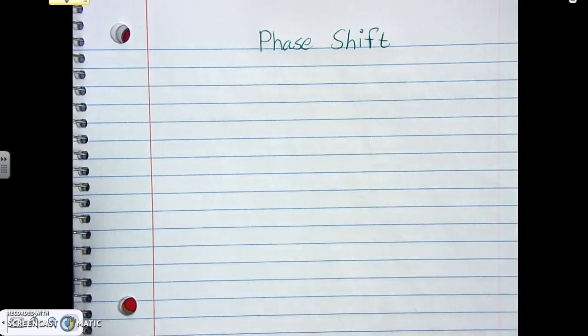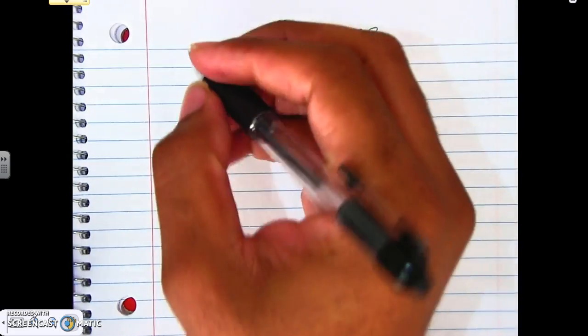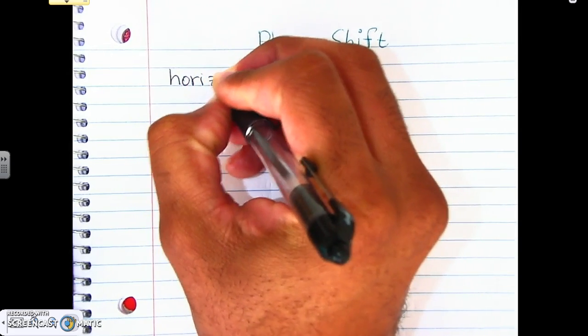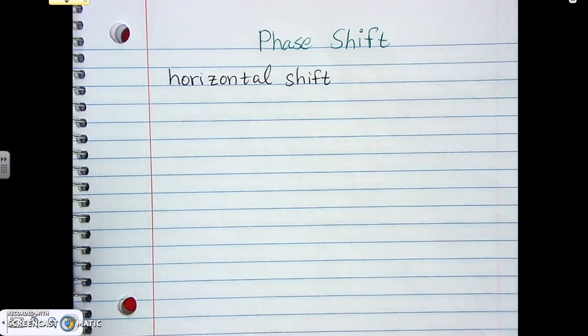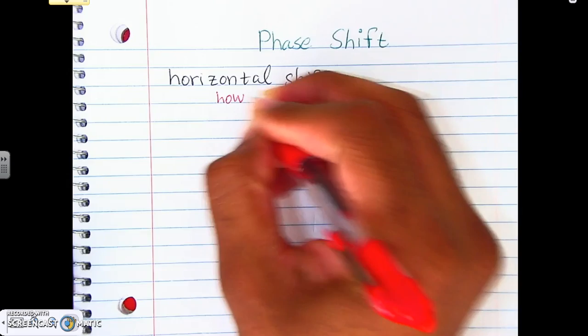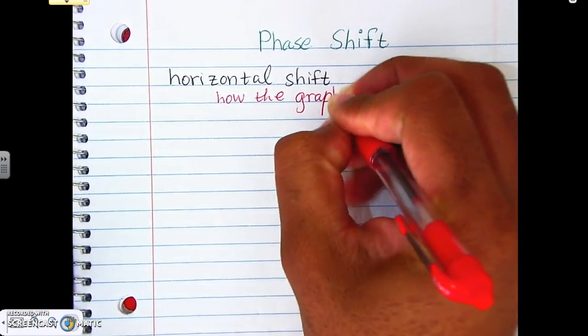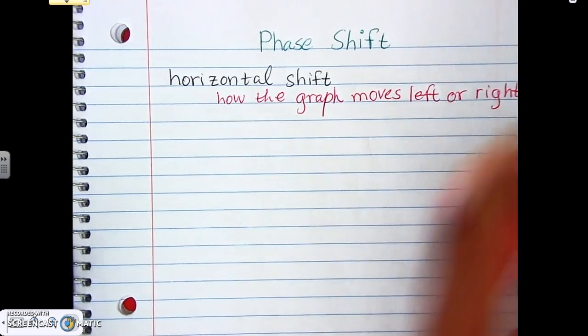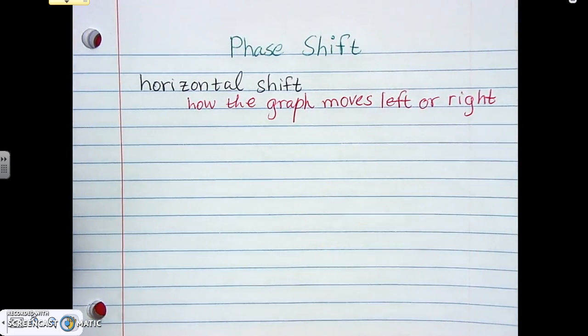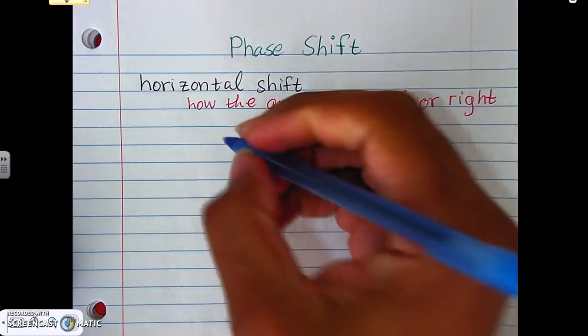So the horizontal transformation is one of those things that we're dealing with now. The phase shift. The horizontal shift. So we did up and down. We shrink and expand. We talked about doing all the other stuff. We're going to talk about flipping later on. But here, we talk about the phase shift. And this is our horizontal shift. And the definition is, this is how the graph moves left to right.